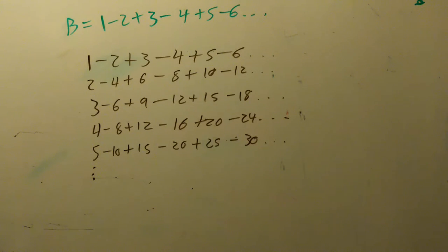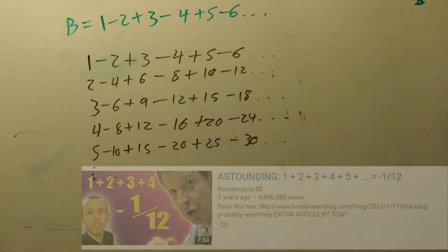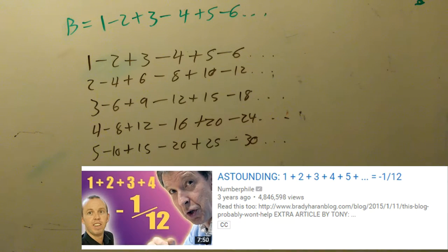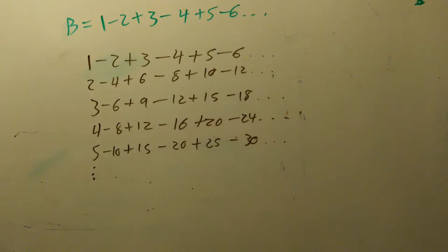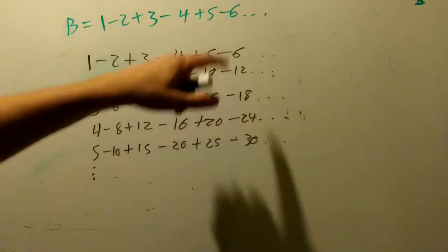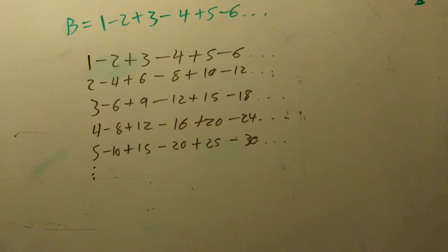So I want to start out by saying this is not a definitive proof, and this is based off of the whole controversial 1 plus 2 plus 3 plus 4 plus 5, etc., is equal to negative 1 twelfth. And part of that proof says that 1 minus 2 plus 3 minus 4 plus 5 minus 6 is equal to one quarter.